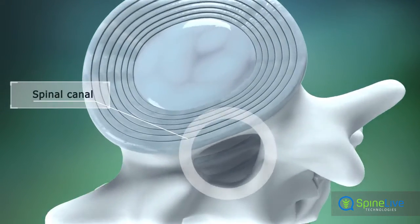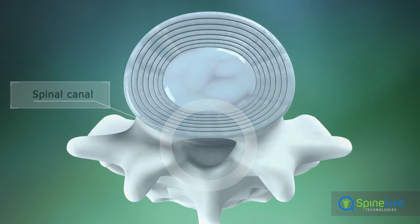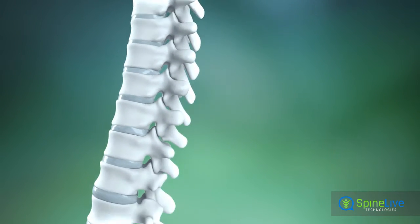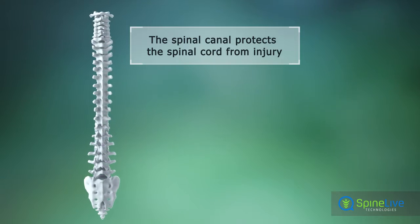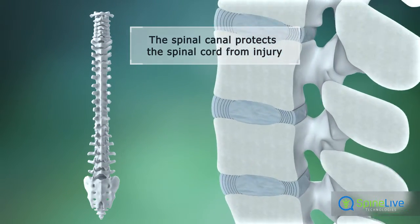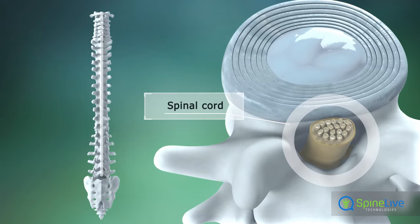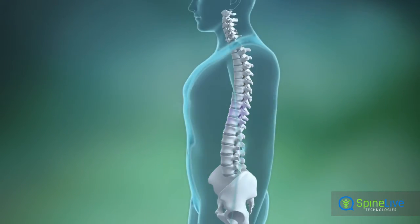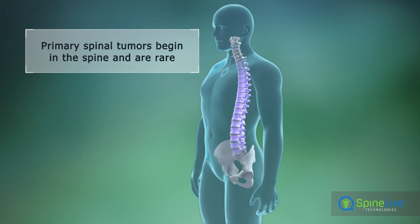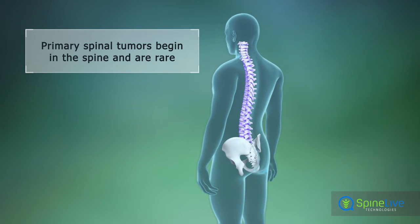Behind the vertebral bodies is located a vertical tunnel called the spinal canal. The spinal canal contains the spinal cord and protects it from injuries. Some tumors start their growth in the spine; these are called primary spinal tumors and are rare.